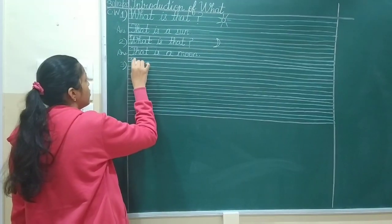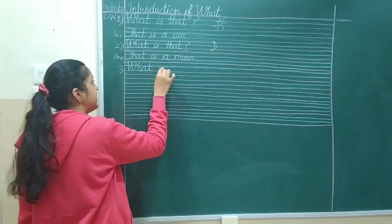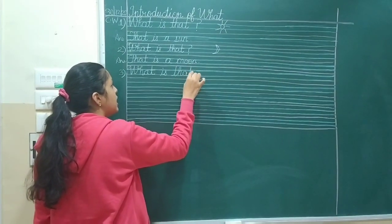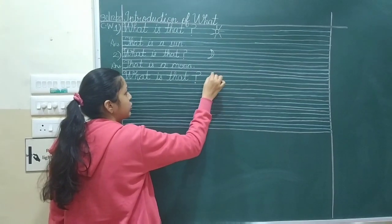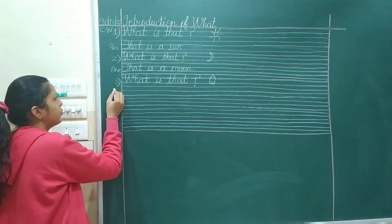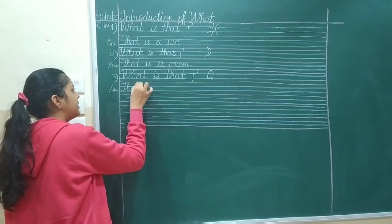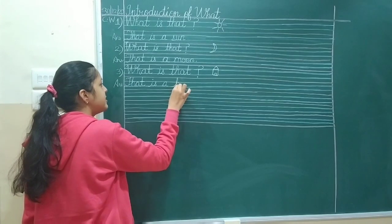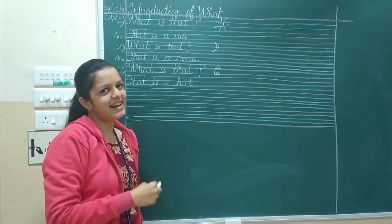Let's write. Next. What? W-H-A-T. What is that? Now, we use that when the object is far away from us. So we are going to draw the picture of hut. H-U-T. Hut. So what is that? That is a hut.